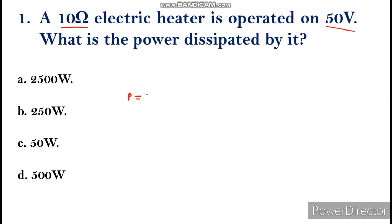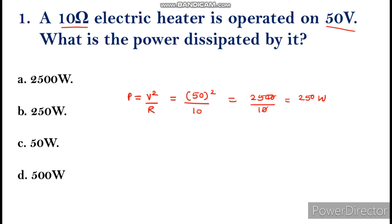Power is given by V squared divided by R. Voltage is 50, so 50 squared divided by R, which is 10. 50 squared is 2500 divided by 10 — the zeros cancel — giving 250 watts. The answer is option B, 250 watts.